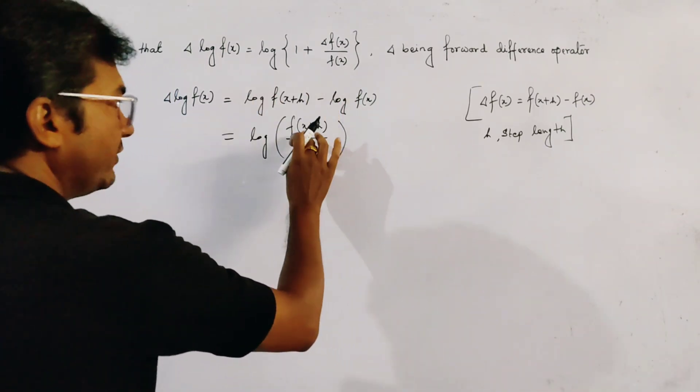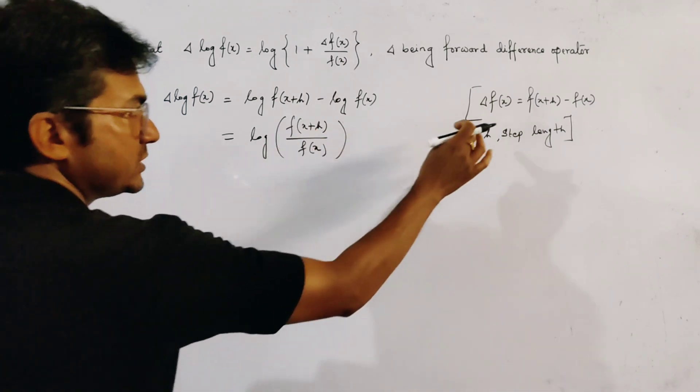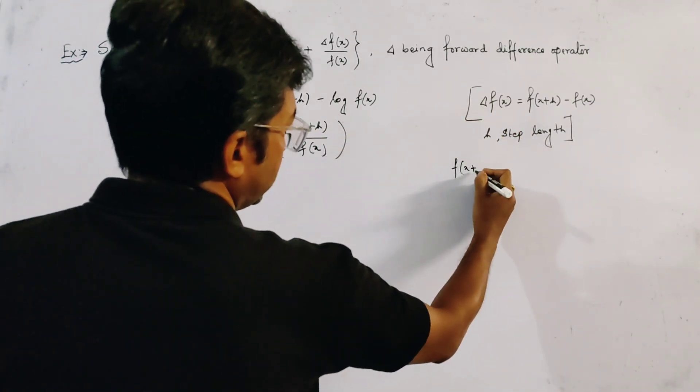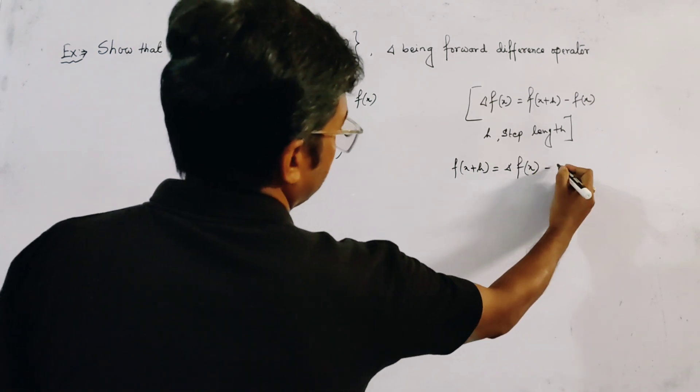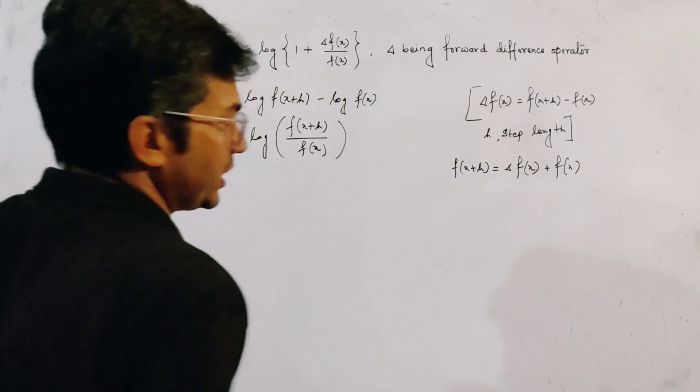Now, we put here the value of f of x plus h from here. That is, f of x plus h is delta f of x plus f of x.